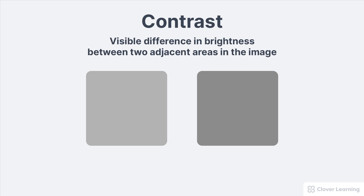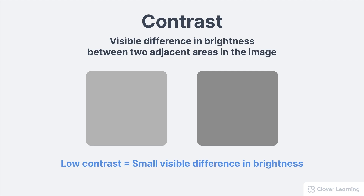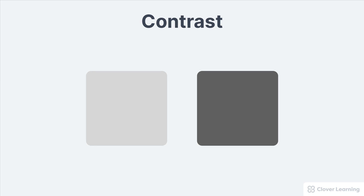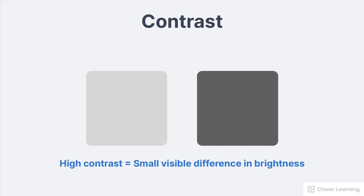Here's a very basic example. Consider these two squares — they're like pixels within a radiograph. These two squares are nearly the exact same brightness level. We call that low contrast because the visible difference in brightness levels is very small. But if we brighten the first square and darken the second square, now there's a greater difference in brightness level. This is higher contrast.